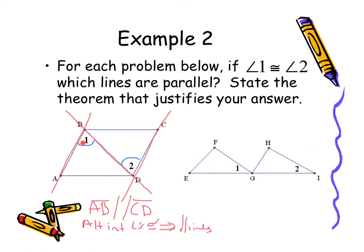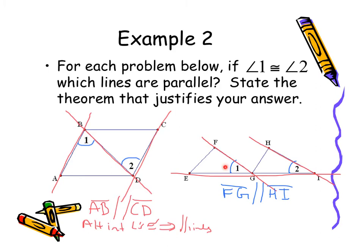Notice how these angles are on either side of the transversal and on the inside of the parallel lines. For the next example, feel free to pause and try it on your own. With angles 1 and 2 congruent, looking at the segments forming those angles, FG is parallel to HI. These two angles are in the same spot relative to the transversal — they're corresponding angles. If corresponding angles are congruent, then we have parallel lines.